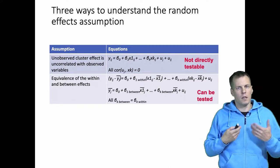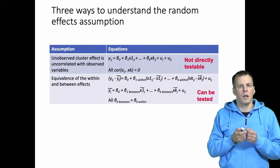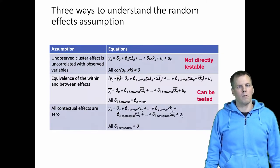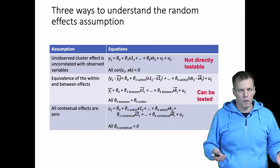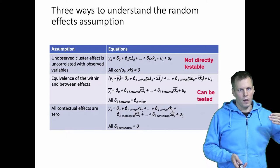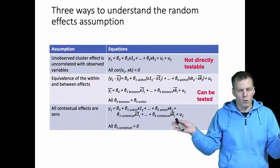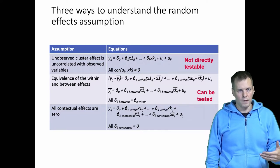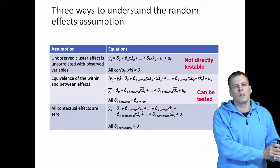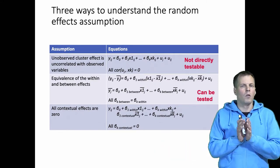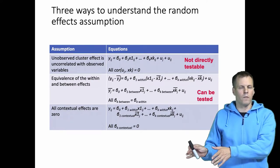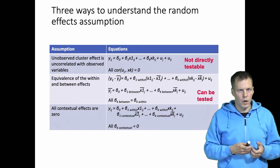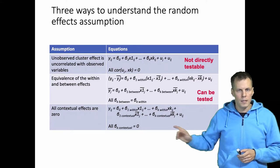There's a third way, which I think is the superior way of understanding the random effects assumption because it also allows understanding it from a theoretical perspective. The third way is that there are no contextual effects — a variable only has a within effect and no contextual effect. For example, if a person's intelligence influences how that person behaves in a team, then intelligence doesn't influence how others behave, and the intelligence of others doesn't influence the behavior of the focal individual. So the variable only has a within effect — that's the third way of understanding the random effects assumption.